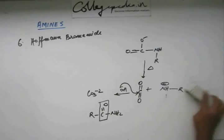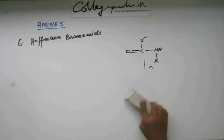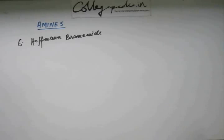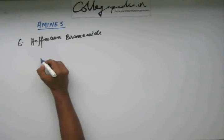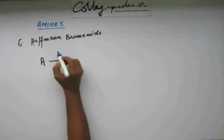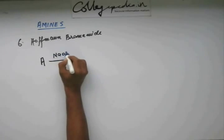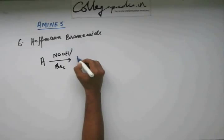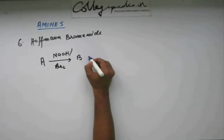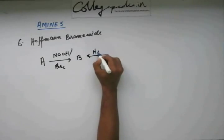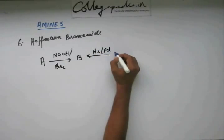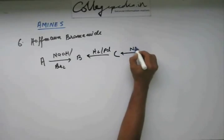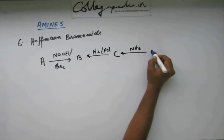Let's solve a small problem then. Suppose I start from A, I add NaOH/Br2 to it. First I get B, B I can get by hydrogenation on C,